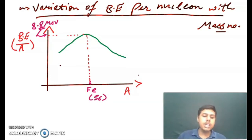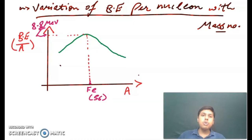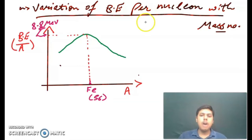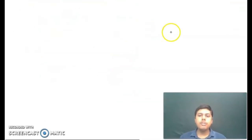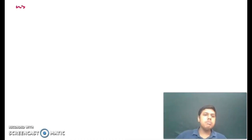The heavier nuclei, being unstable, have a tendency to split into medium nuclei — this process is called nuclear fission. The lighter nuclei, being unstable, have the tendency to fuse into a medium-sized nucleus — this process is called nuclear fusion. Now let us see some important points about radioactivity.